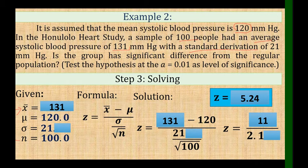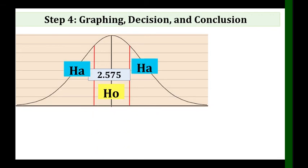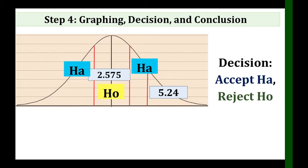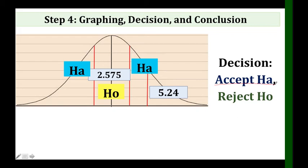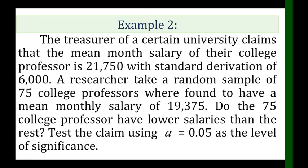Our computed Z is 5.24. The critical value is 2.575. If the computed value is inside the critical region we accept Ho; if it is outside, we accept Ha and reject Ho. Since 5.24 exceeds 2.575, the decision is to accept Ha and reject Ho. Going back to Step 1, the conclusion is: the group has a significant difference from the regular population.